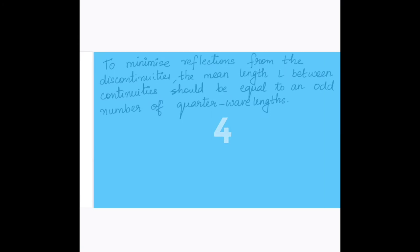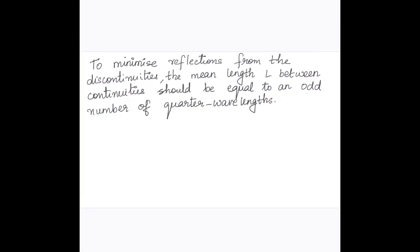So in order to minimize, the mean length is usually selected to be equal to (2n+1) times lambda G by 4, where lambda G is the guided wavelength and N value will be 0, 1, 2, etc. Lambda G is the wavelength of the waveguide.